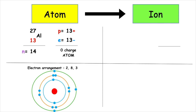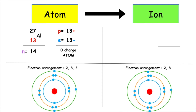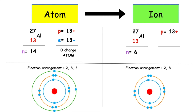Aluminium is found in Group 3 of the periodic table. It has the electron arrangement 2-8-3. All elements want to achieve stability by having a full, stable outer electron shell. Aluminium has three electrons in its outer shell, and it's easier for it to lose three than gain five. So therefore, the ion would have the electron arrangement 2-8. We have not changed the number of protons inside the nucleus, but we have changed the number of electrons. This means that the aluminium ion would have a 3+ charge.